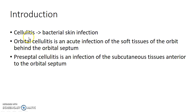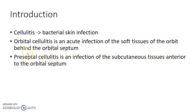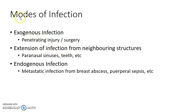Cellulitis is a term that denotes bacterial skin infection. Orbital cellulitis is an acute infection of the soft tissues of the orbit behind the orbital septum. It is different from preseptal cellulitis, which is an infection of the subcutaneous tissues anterior to the orbital septum. Remember, orbital cellulitis is infection posterior to the orbital septum.